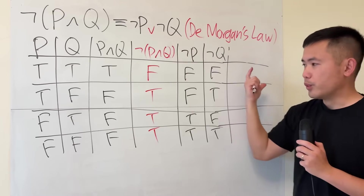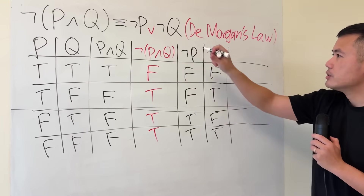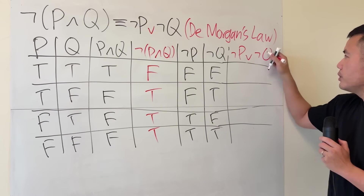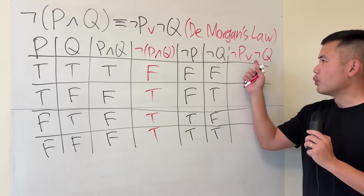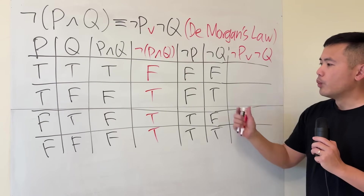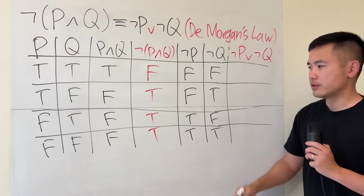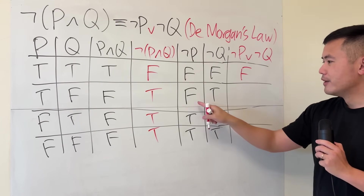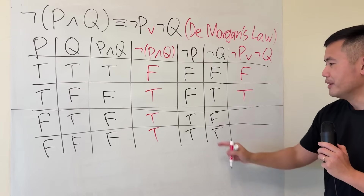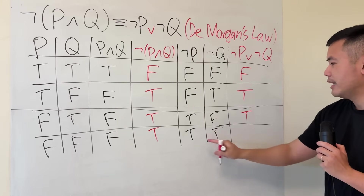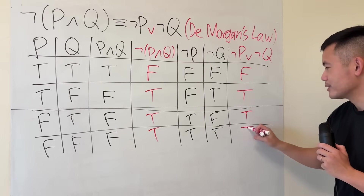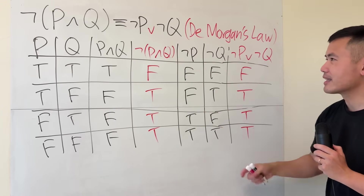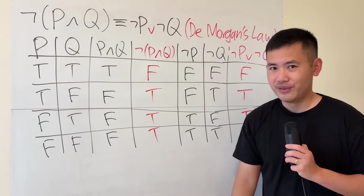Let's verify this with not P or not Q. This is an OR statement, so as long as one of them is true, the whole thing is true. But if both are false, it's still false. Going through: false and false gives false; false and true gives true; true and false gives true; true and true gives true. This matches exactly the not (P and Q) column, so they are logically equivalent.